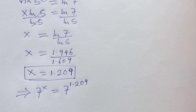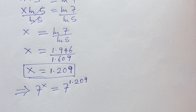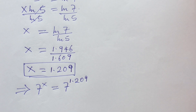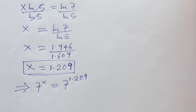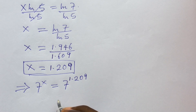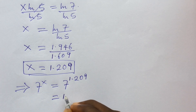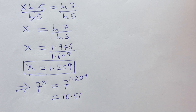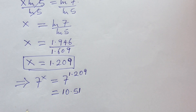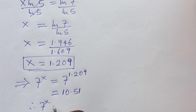Now remember what we were asked to solve for — we need 7 to the power of x. So this implies 7 to the power of x equals 7 to the power of 1.209. Using the calculator, 7 to the power of 1.209 gives approximately 10.5129, which to four significant figures is 10.51.